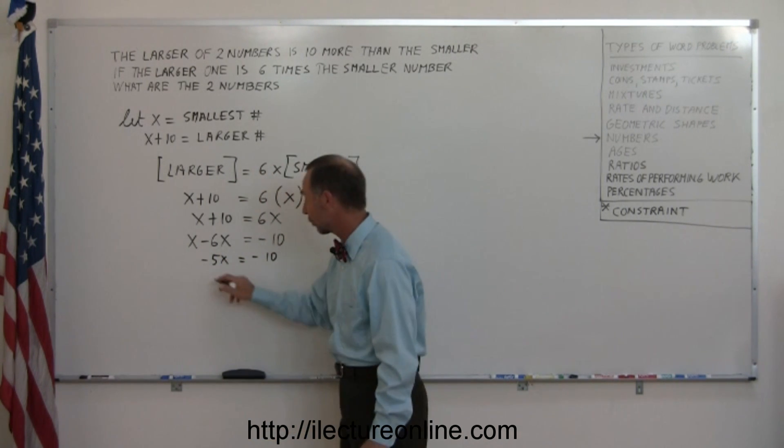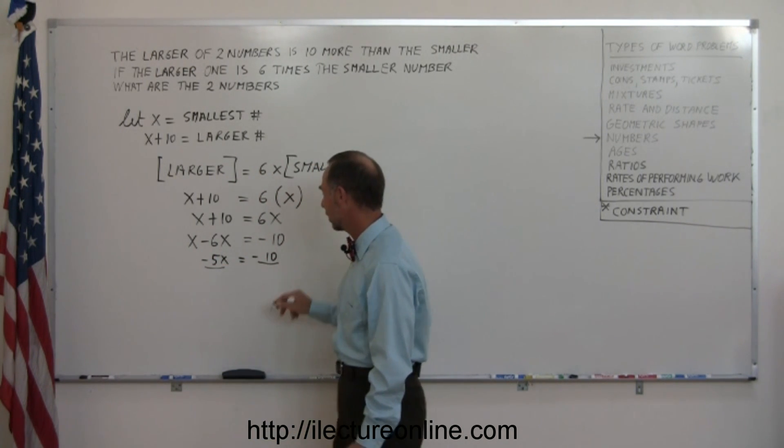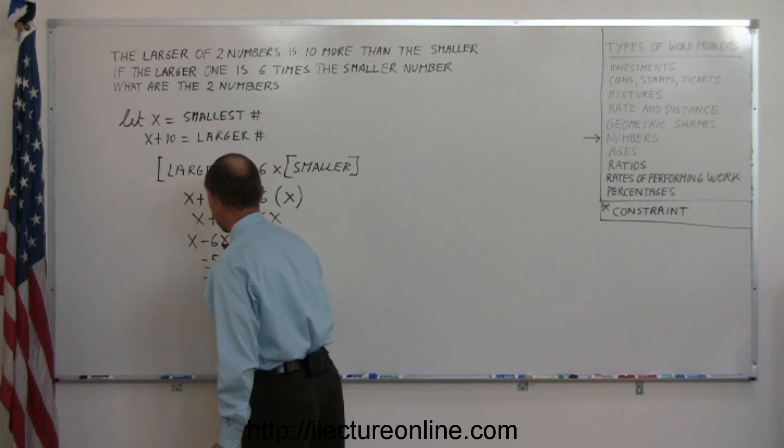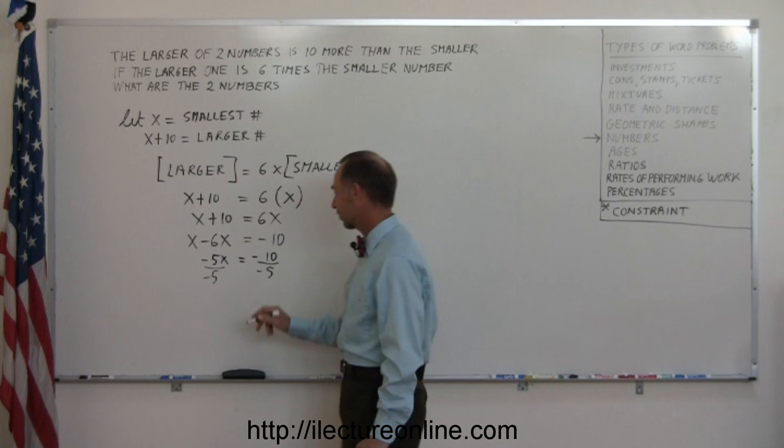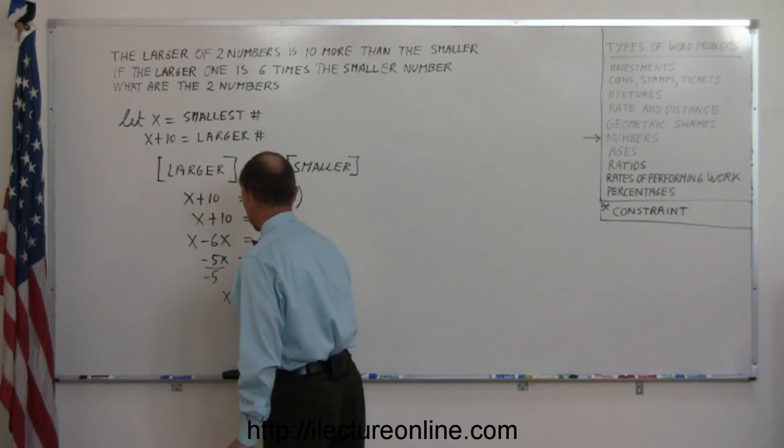The last thing we do is divide both sides of the equation by the coefficient in front of x. That's the number in front of x. We call that the coefficient. So that cancels out. We end up with x equals 2.